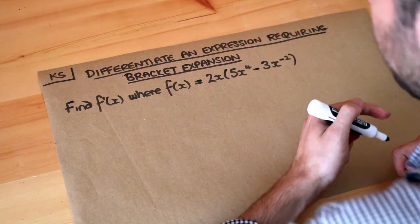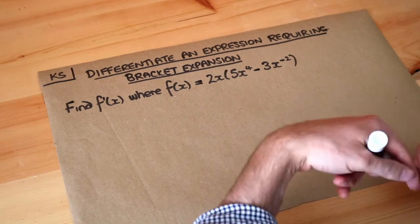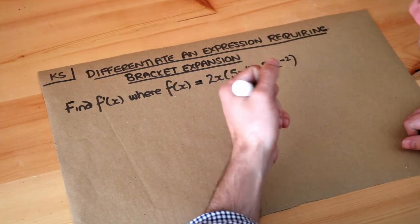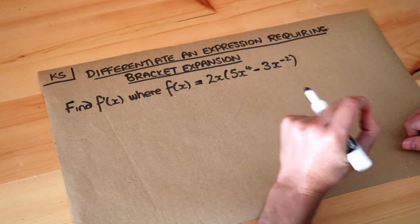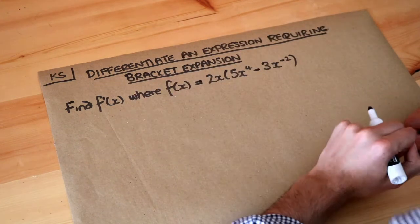In a previous video we explored what differentiation means. It just means to find the gradient function, and the gradient function is a function that allows you to find the gradient of a curve at a specific point.